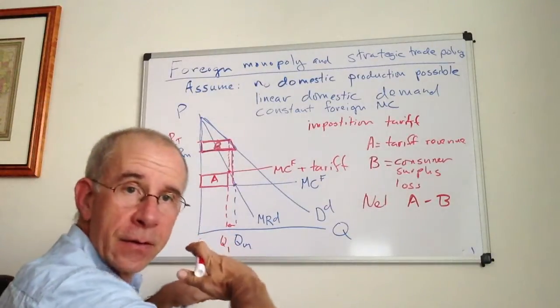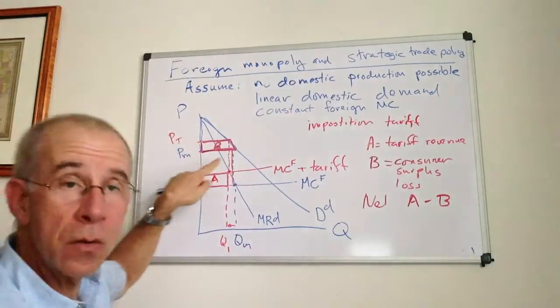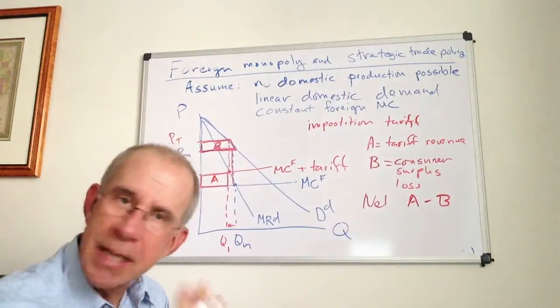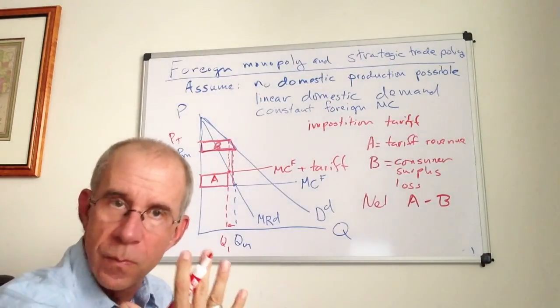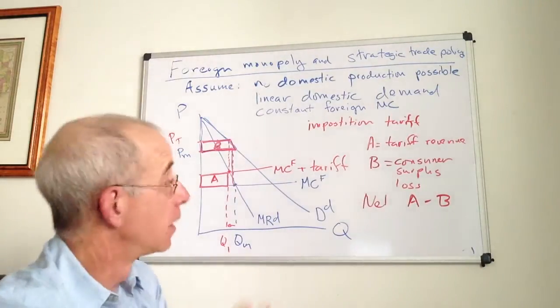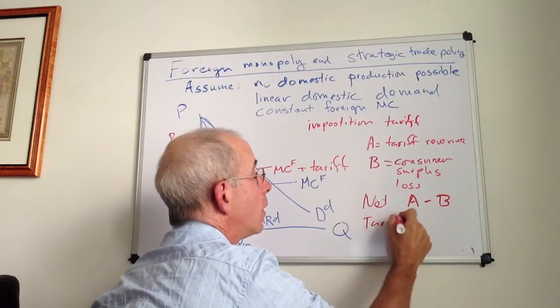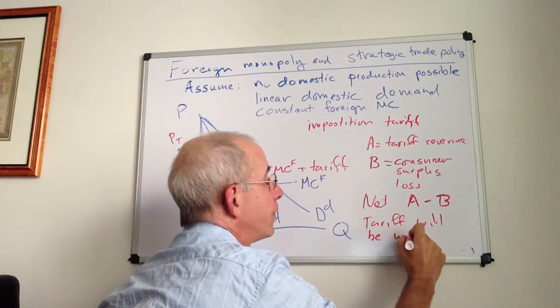And the flatter the demand curve, the smaller the impact is on consumer surplus. So it's that combination of the two that really is the key part. And again, as it turns out, if the marginal revenue curve is steeper than the demand curve, the tariff will be welfare improving.